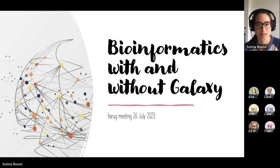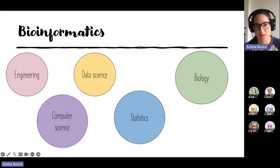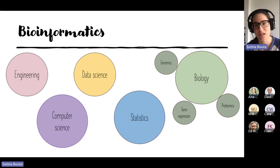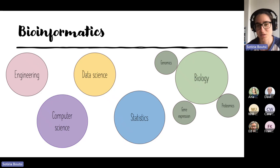Bioinformatics is a broad term. The biology part, which is what we are particularly interested in as biologists, is usually related to genomics, gene expression, and proteomics. There are many things you can do, but these are the classic principles that we tend to use bioinformatics with.